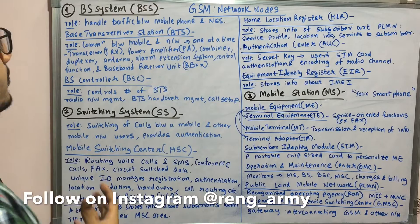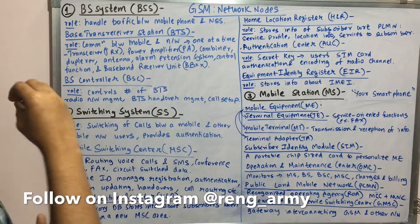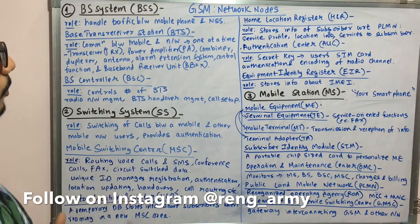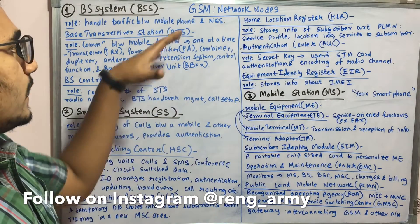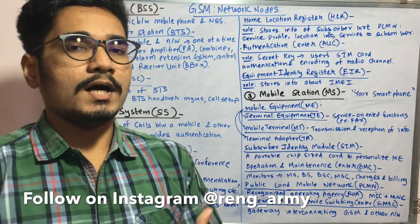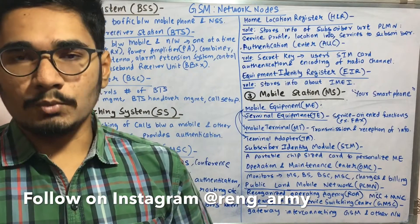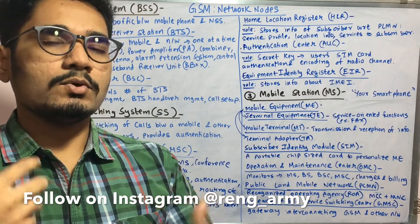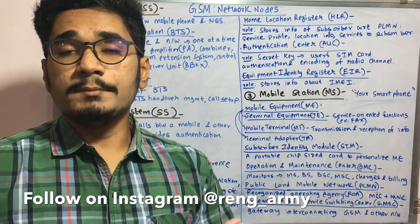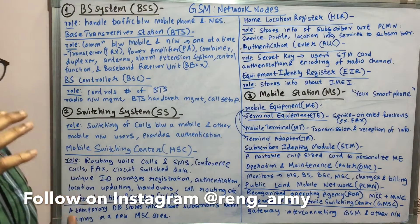Let's start with the Base Station System (BSS). The role of BSS is to handle the traffic between the mobile phone and the NSS — the Network Switching System. Mobile phones communicate with other mobile users or subscribers, and all the call function routing and handling management is done by the BSS.